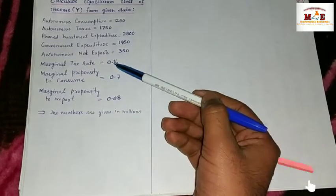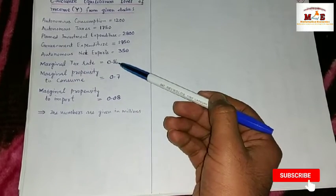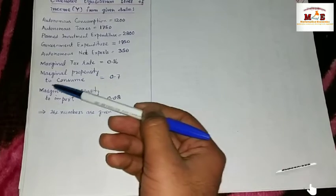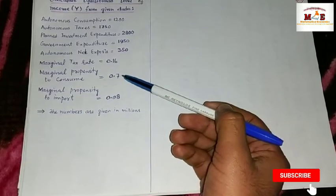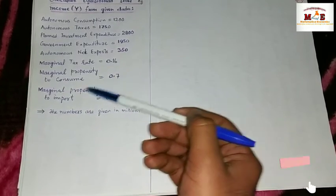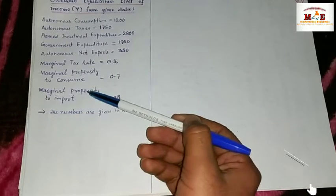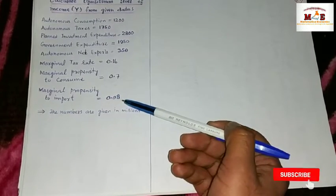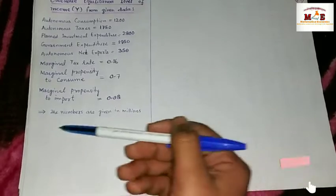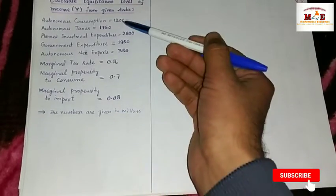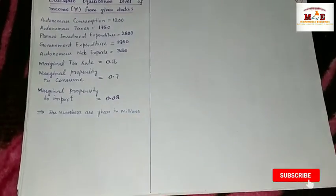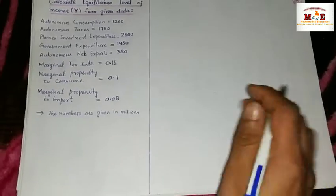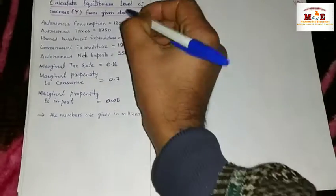Autonomous net exports equal 350. We are also given some rates: marginal tax rate equals 0.16, marginal propensity to consume equals 0.7, and marginal propensity to import equals 0.08. The numbers given here are in millions.